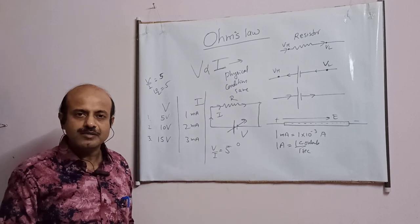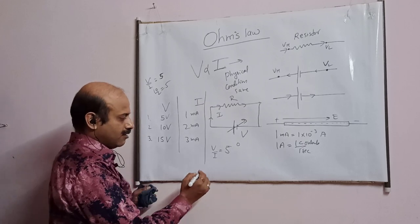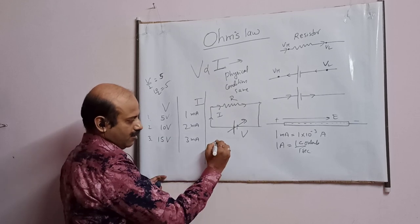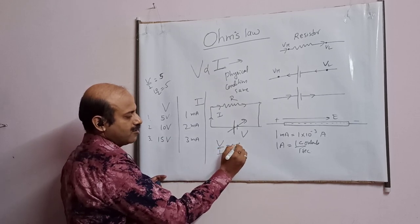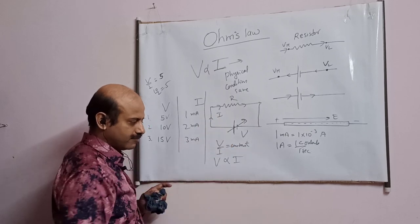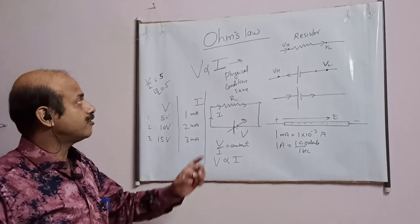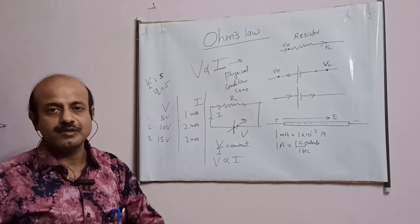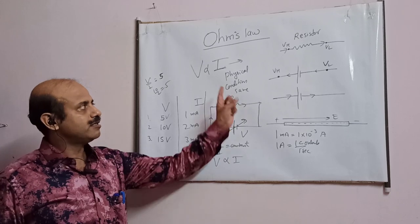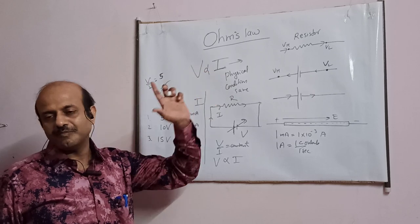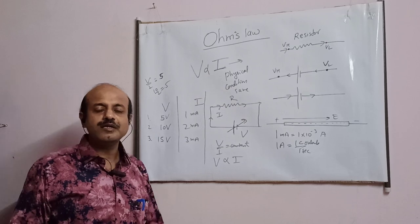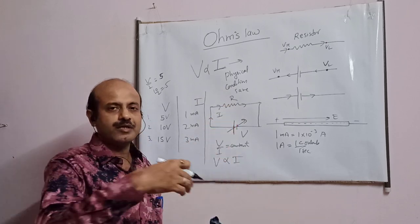Have you noted, student? What is happening in this case is that V upon I is constant. This is what Ohm's law is, written mathematically like this. But remember, Ohm's law is applicable under certain conditions. It is not applicable for every device or every substance. Mostly it is applicable for metals, and that too at lower temperatures. At very high temperatures this relation does not hold, because with increase in temperature the value of R changes.